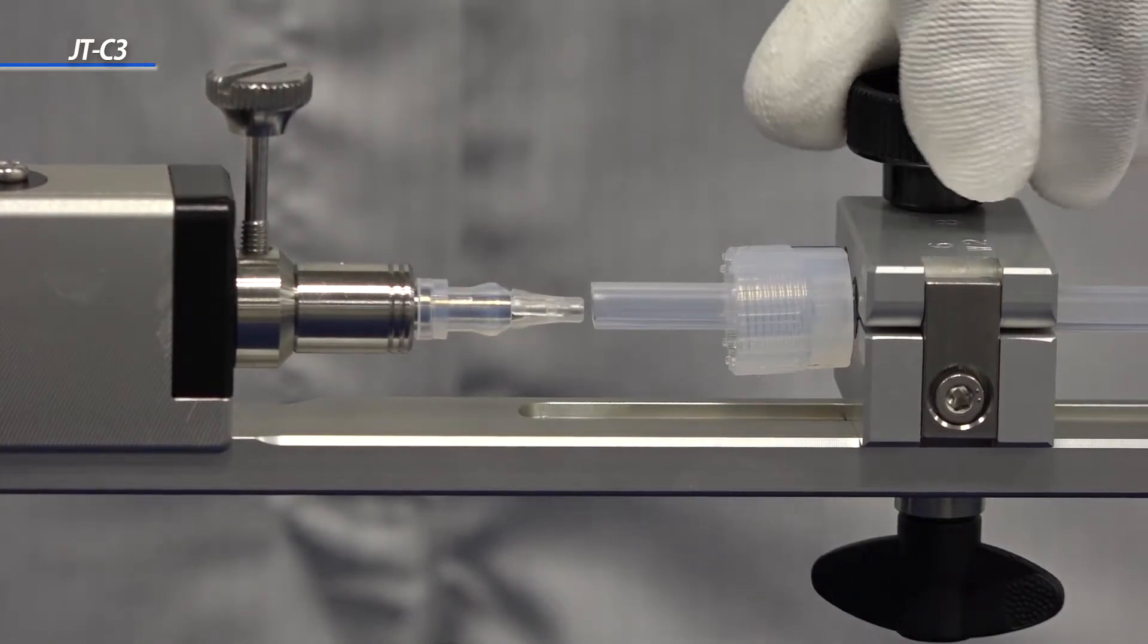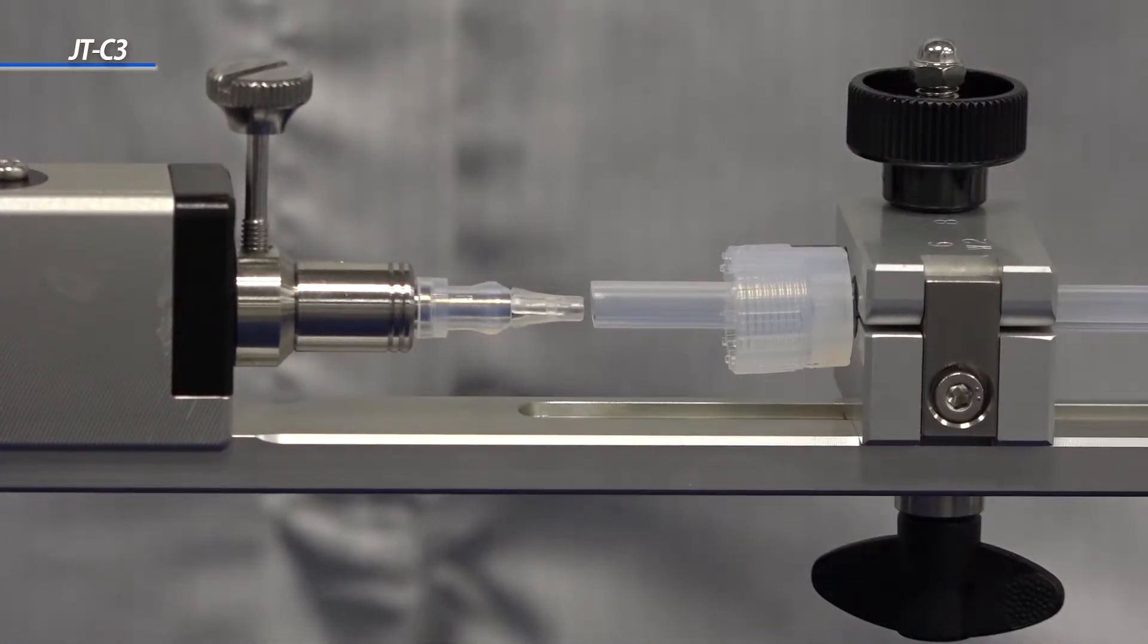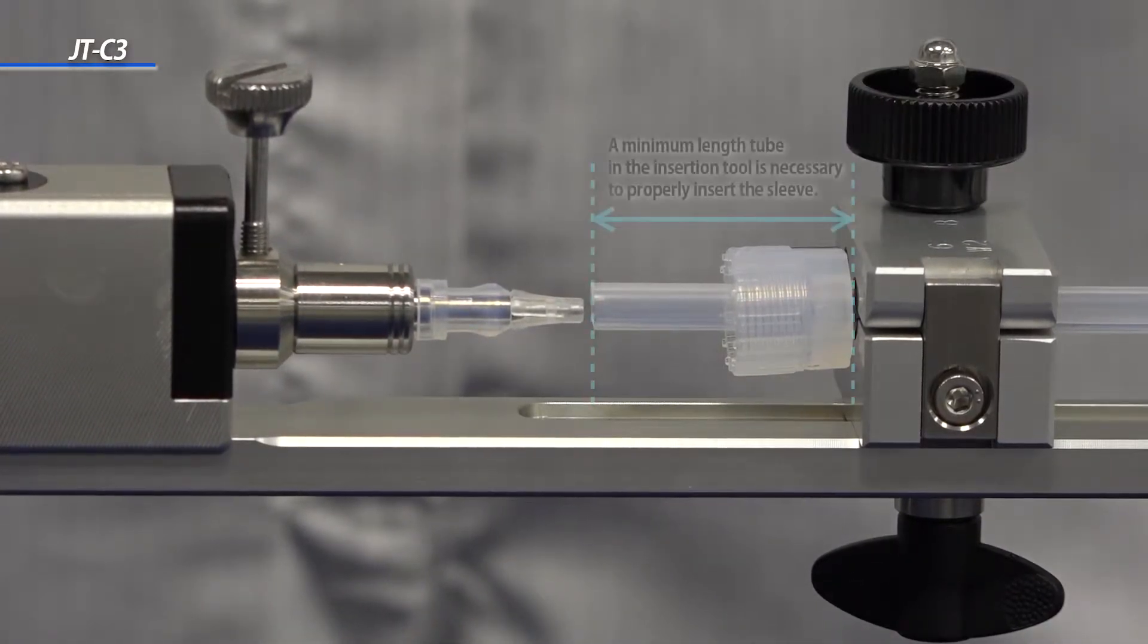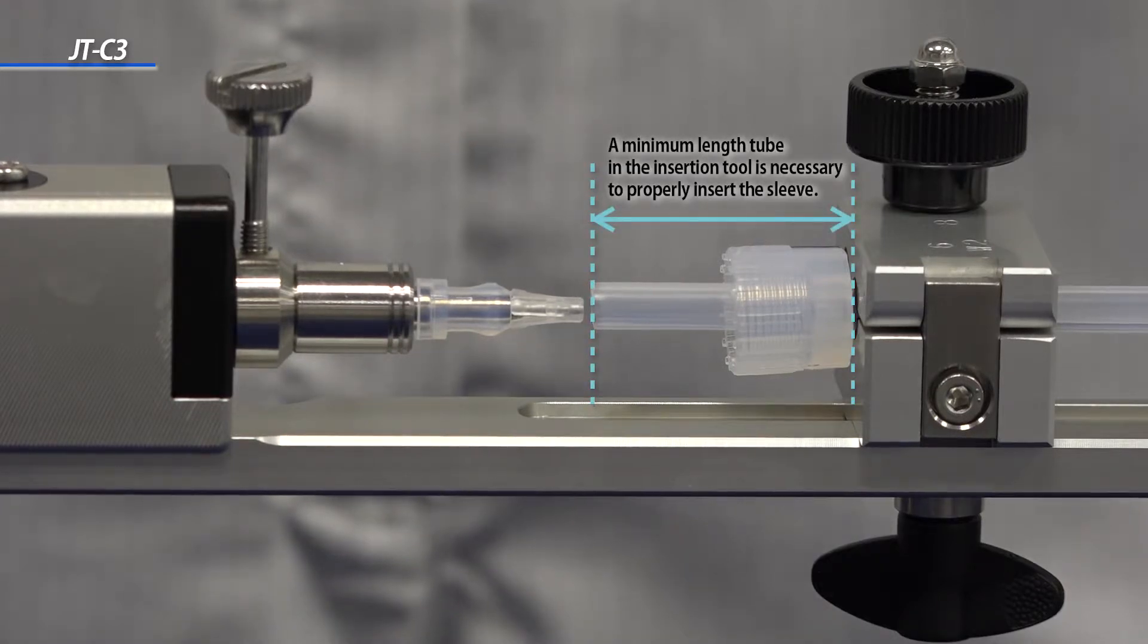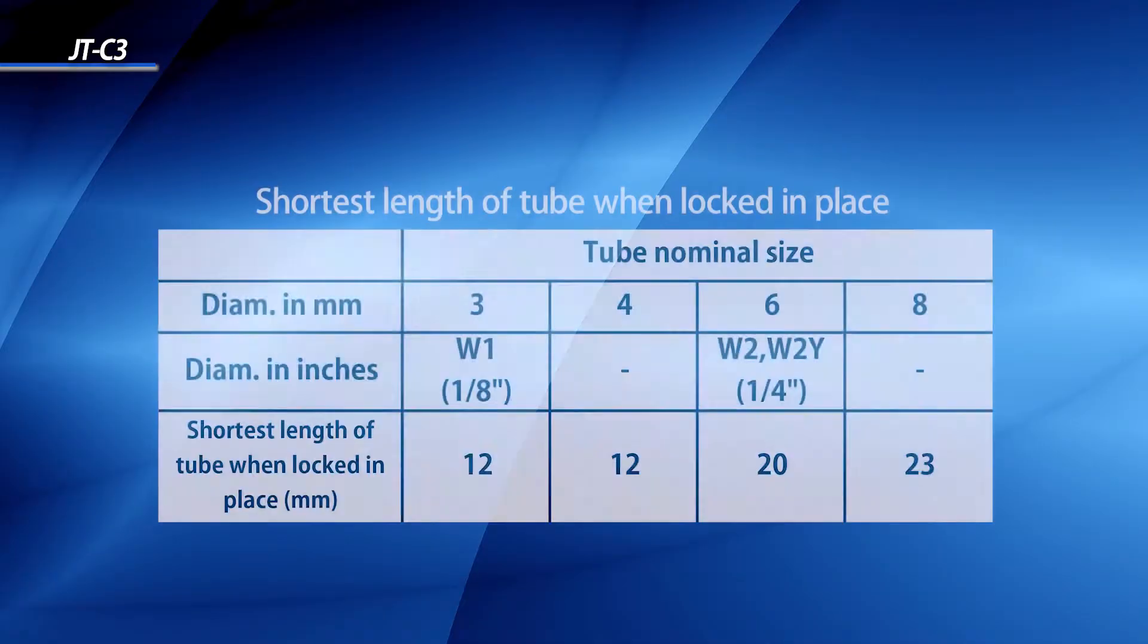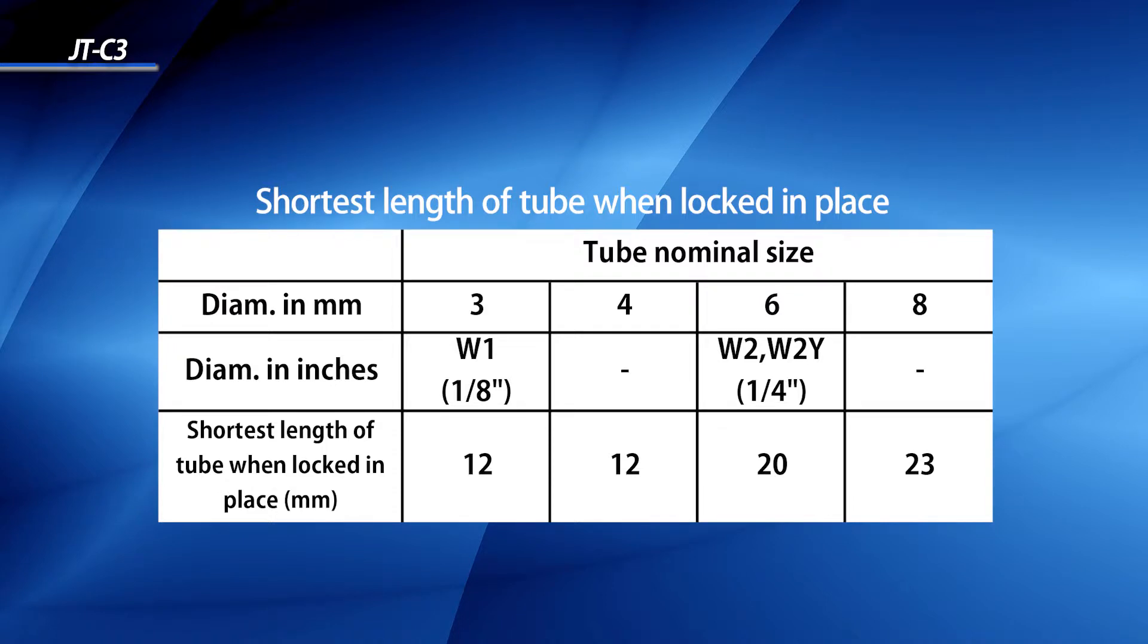This is the minimum length of the tube in the insertion. Be sure to position the tube according to the minimum length guideline. Make sure that the other side of the tube has the union nut placed on the tube.